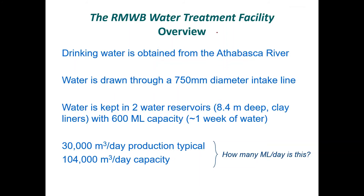Having reservoirs is good because sometimes we want to stop our intake from the river. During ice breakup, they stop taking water — the turbidity goes from the dozens to the thousands within a matter of hours, and it's not worth cleaning that water. They let all that flow through and take the water back when it's cleaner. The plant runs at about 30,000 cubic meters per day — that's 30 million liters. The capacity is much larger to allow for population growth or events like forest fires.